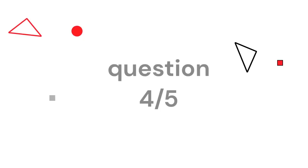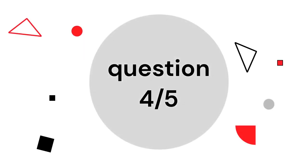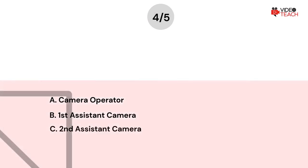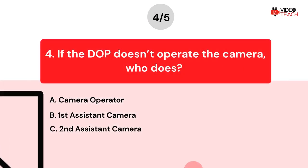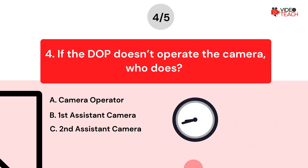Question number four. If the director of photography doesn't operate the camera, who does? Option A: Camera operator. Option B: The first assistant camera. Option C: The second assistant camera. Now you have about 15 seconds to think about your answer.